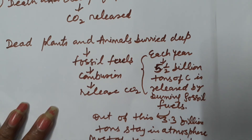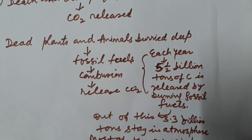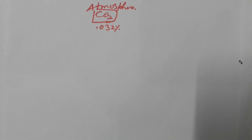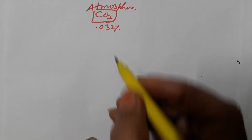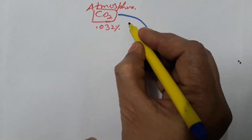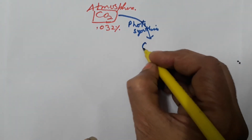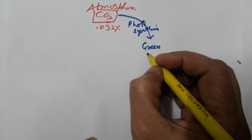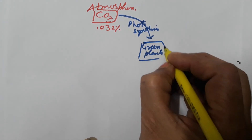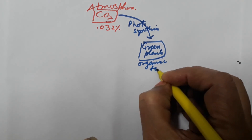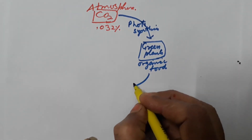These are the different steps which help in the cycling of carbon in nature. Now I am going to draw the carbon cycle for a clear understanding of the concept. As we all know, CO2 is present in the atmosphere and its percentage is equal to 0.032%. CO2 is fixed in the process of photosynthesis by green plants or autotrophs, and they synthesize organic food. This organic food is consumed by animals.